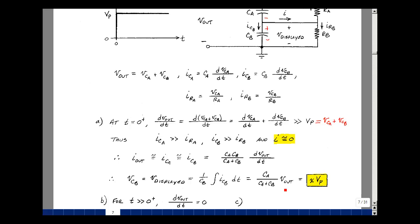And that's just the value of v out. That's going to be equal to this capacitive voltage divider, which we call x on the previous page. And v out at this instant in time is just equal to v sub p.